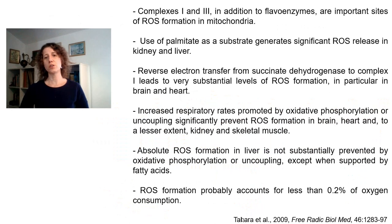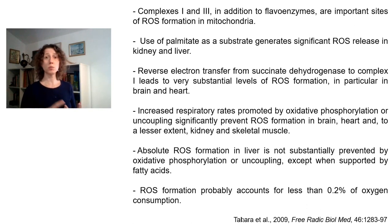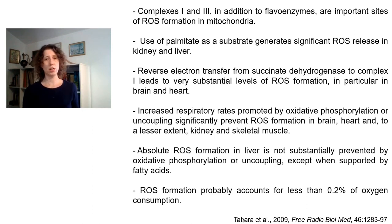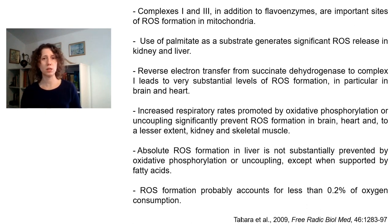A few years ago — in 2009 — my lab did something we jokingly called a mitochondrial reactive oxygenome, in which we measured mitochondrial hydrogen peroxide release in many different tissues, with many different substrates, respiratory states, and inhibitors of mitochondrial oxidative phosphorylation, to look at the general properties of mitochondrial oxidant production. We didn't find anything absolutely new — basically we were confirming things that others had shown — but by doing it all together in one place, we arrived at some general properties of mitochondrial oxidant production.